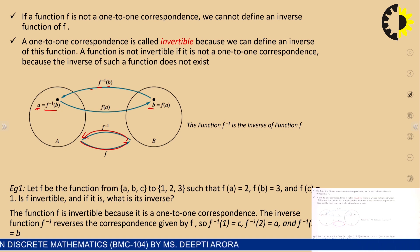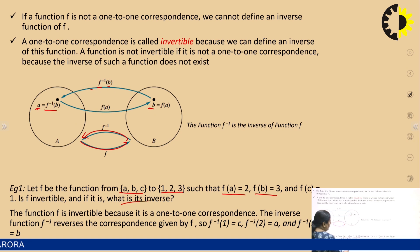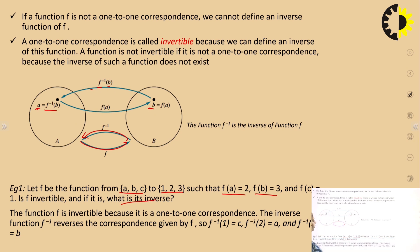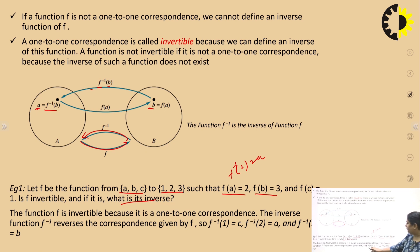Let F be the function from {A, B, C} to {1, 2, 3} such that F(A) = 2, F(B) = 3, and F(C) = 1. Is F invertible? Yes, it is a one-to-one correspondence — different assignments for different elements. So the inverse exists. F⁻¹(2) = A, F⁻¹(3) = B, and F⁻¹(1) = C.